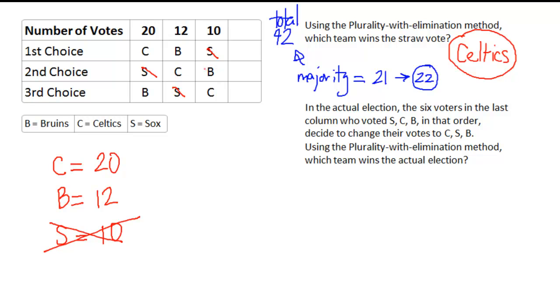do you see that the Bruin right here in this third column, this Bruin actually moves up to the top? That gives the Celtics still a total of 20 first place votes, but the Bruins now move up to 22 first place votes. And when that happens, now the Bruins are the winners.